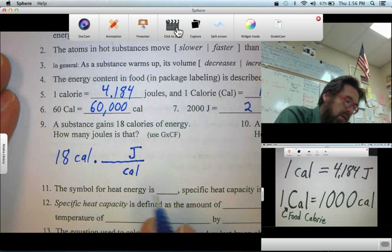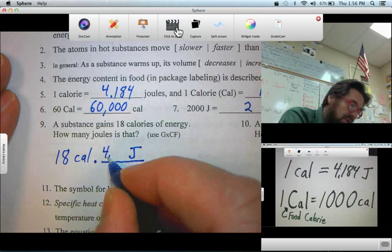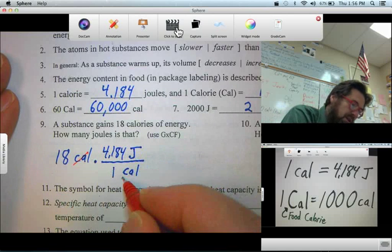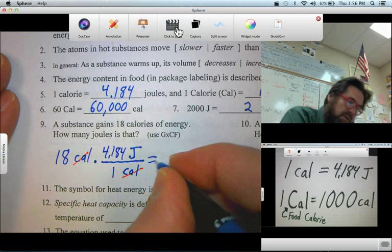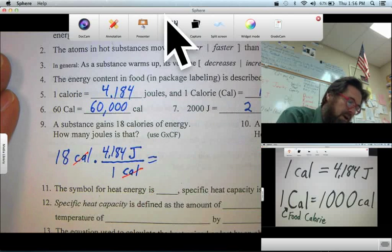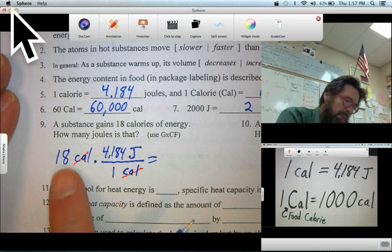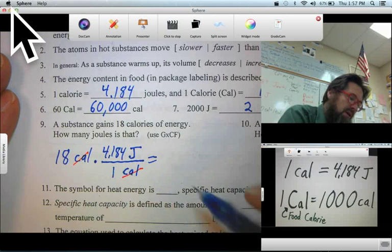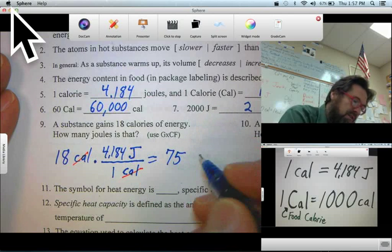And we know, then we can fill in the numbers. One calorie is 4.184 Joules. And the units cancel. Calories over calories equals 1. So, there we have our problem. 18 times 4.184 to 2 sig figs. That gives us 75, and the units is Joules.